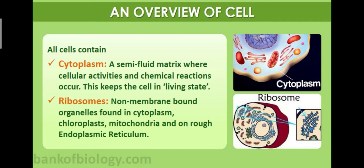Ribosomes are non-membrane-bound organelles found in the cytoplasm. They are scattered freely in the cytoplasm. They are also found in chloroplasts, mitochondria, and on the rough endoplasmic reticulum. In fact, the endoplasmic reticulum is called 'rough' endoplasmic reticulum due to the presence of these ribosomes.